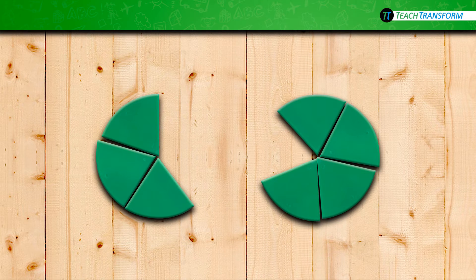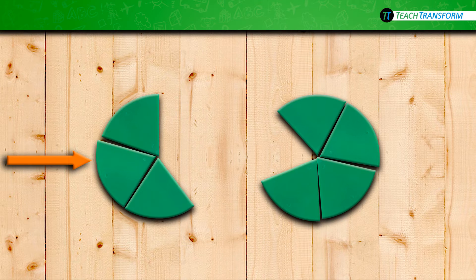Now let's count the fifths on your manipulatives. Use your finger and point at your three-fifths. For three-fifths, you should have three of the fifths pieces. It takes two more of the fifths to complete the circle. Let's count them out loud together: one-fifth, two-fifths, and three-fifths.